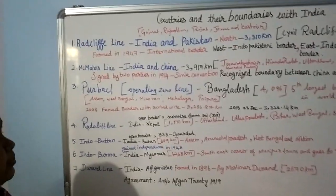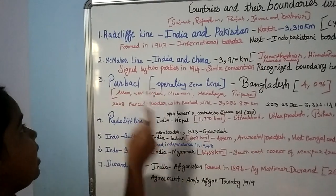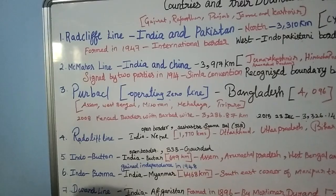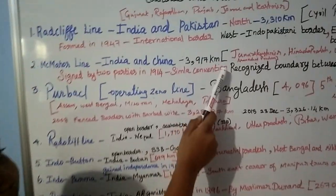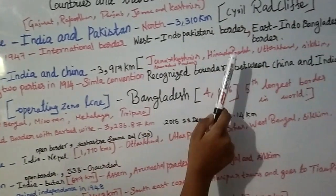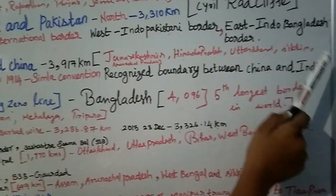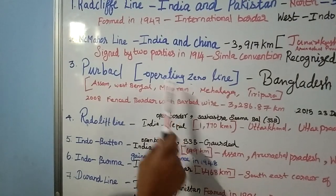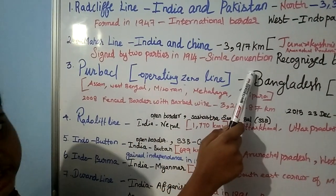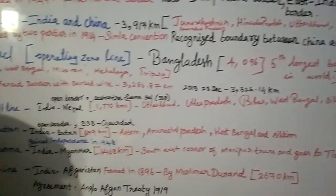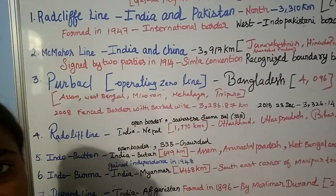Now let's learn about the McMahon Line, which is the line between India and China. That is 3,917 km and the shared states include Jammu Kashmir, Himachal Pradesh, Uttarakhand, Sikkim and Arunachal Pradesh. This was signed by two parties in 1914 due to the Shimla Convention. It is not an international boundary, but rather a recognized boundary between India and China.